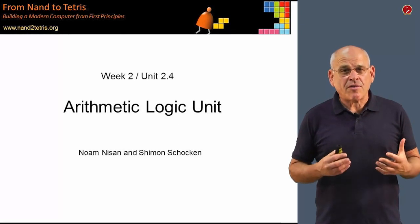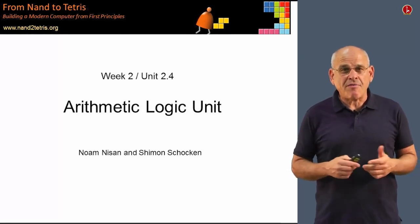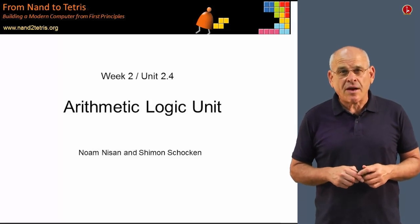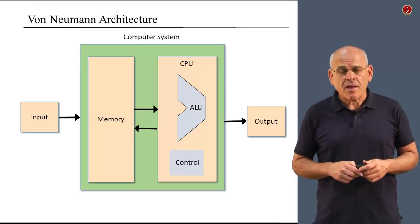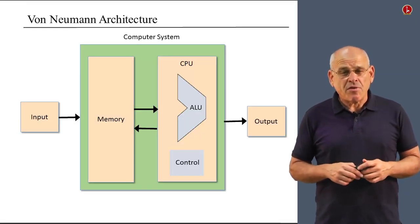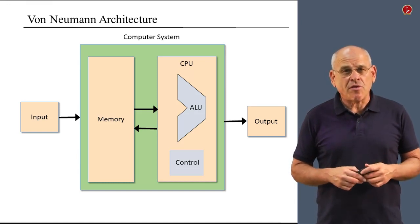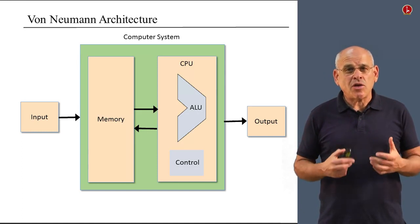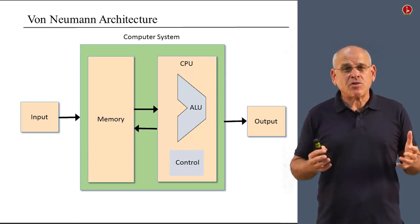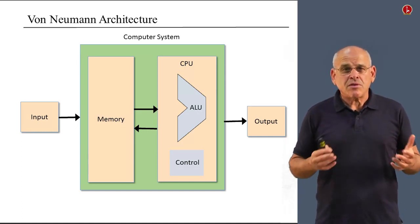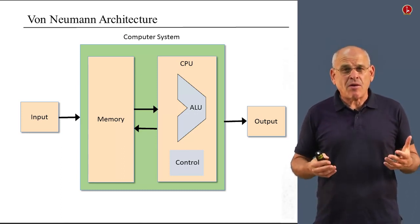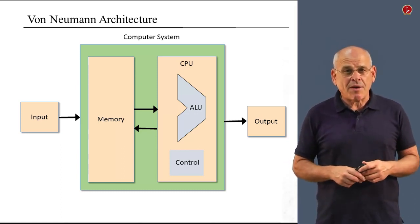In this unit, we're going to talk about a very important component of every general purpose computer called the ALU or the arithmetic logic unit. Back in 1945, the great mathematician John von Neumann wrote a seminal paper in which he included a description of how general purpose computers can be built. And this became known over the years as the von Neumann architecture.